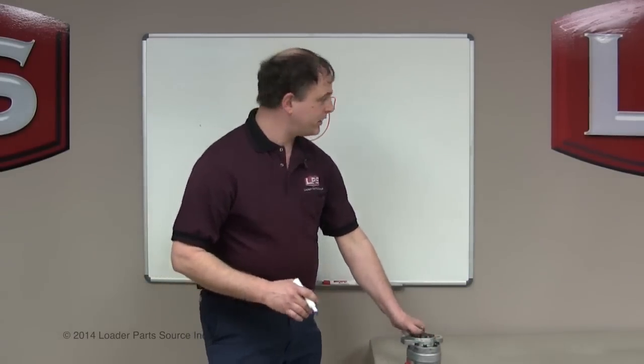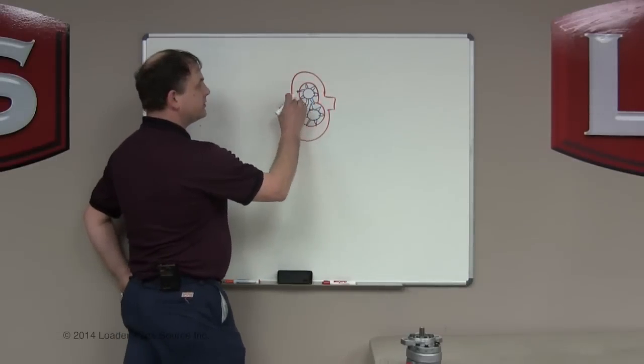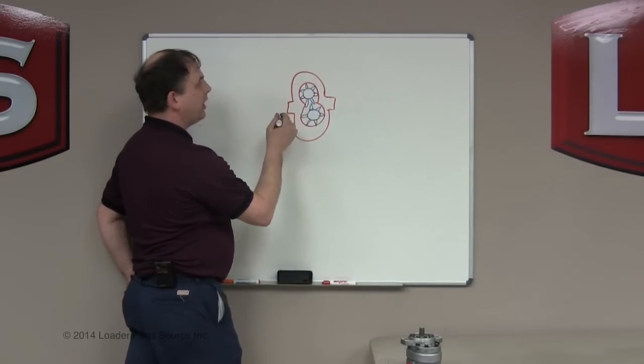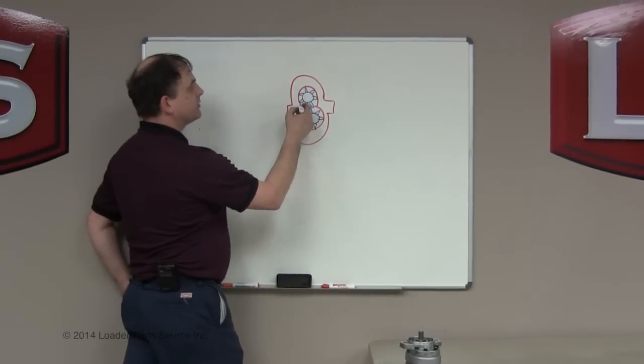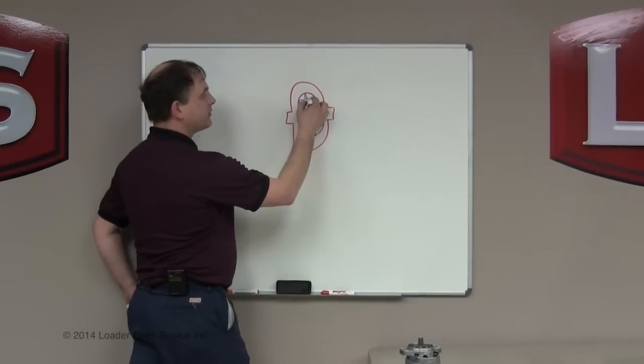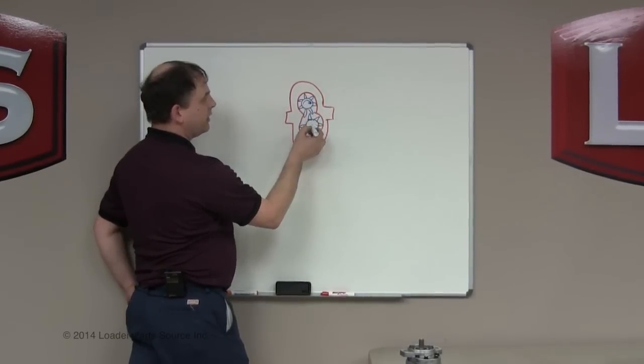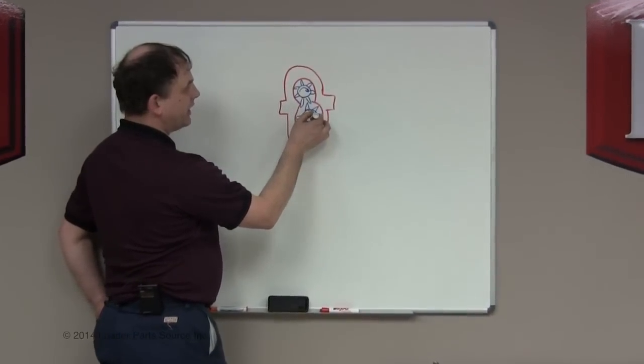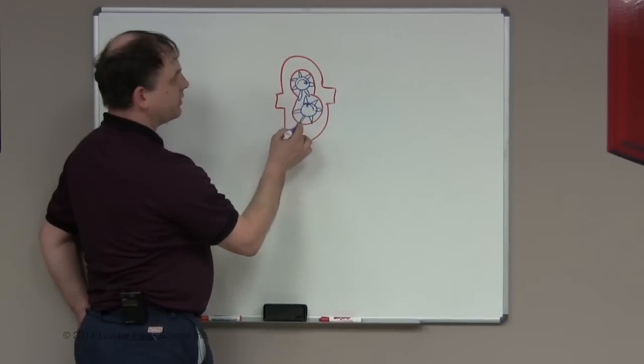There's a housing, a pump body, and there's steel gears. And the way a gear pump works is the one shaft is turning one way, it could be either way, it engages the other shaft, turned it the other way.